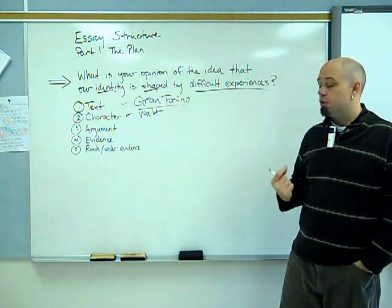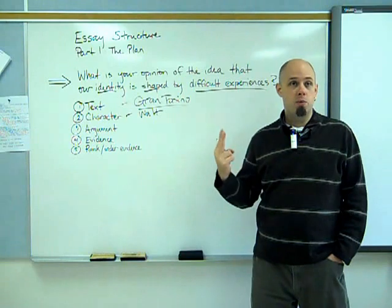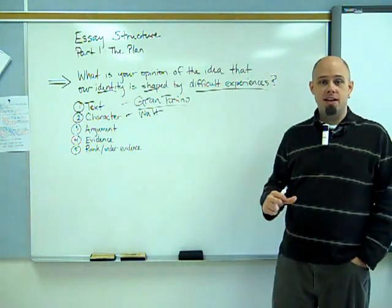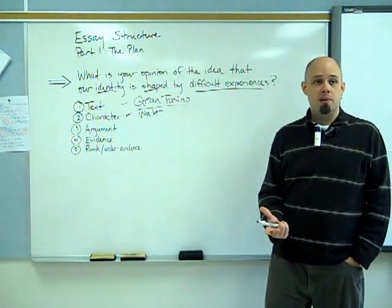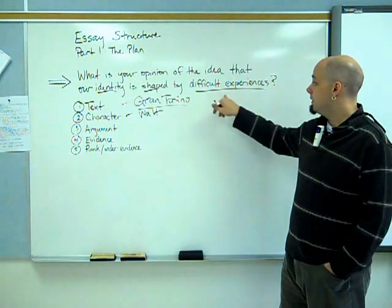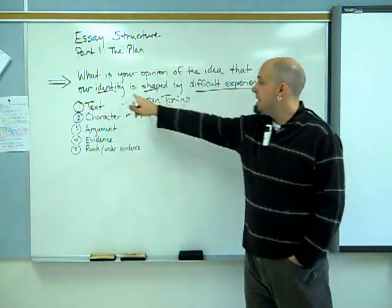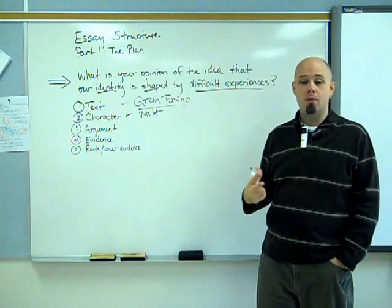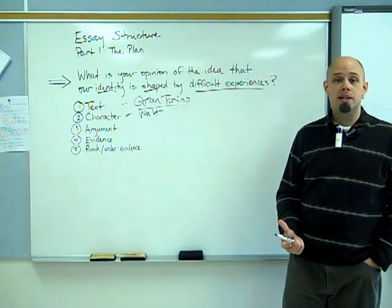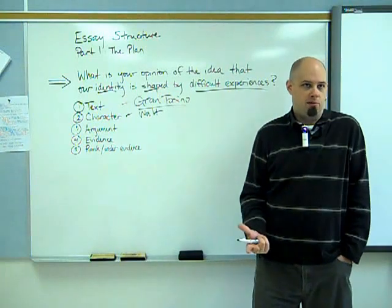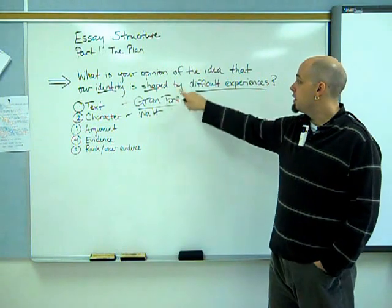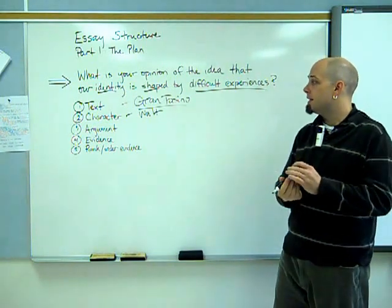So let's think about Walt for a second. Walt was in the Korean War. Walt's wife died. Walt's friend Sue was attacked. His other friend Tao was also attacked. He was living in a neighborhood where he had to use a gun to defend himself. This sounds like a lot of difficult experiences. His identity is shaped. Over the course of the film, he starts off being a racist person, very angry, very bitter to somebody who is loving, who gives up his life in order to save his friends.